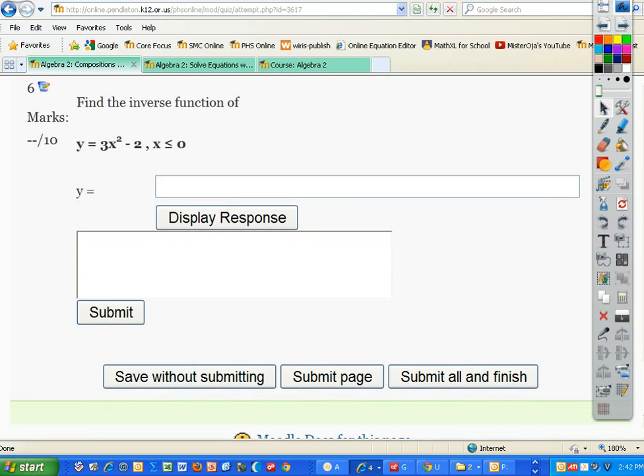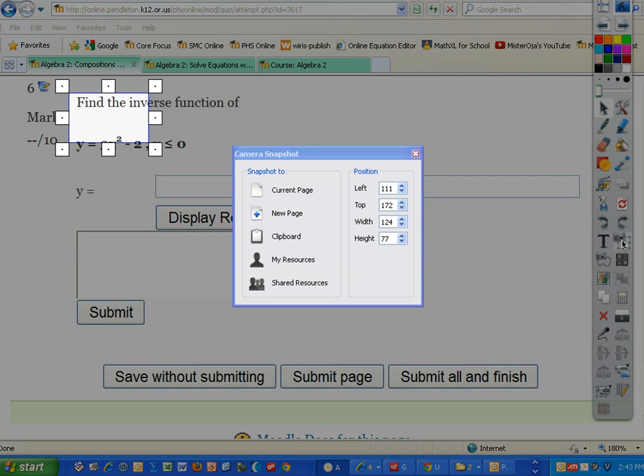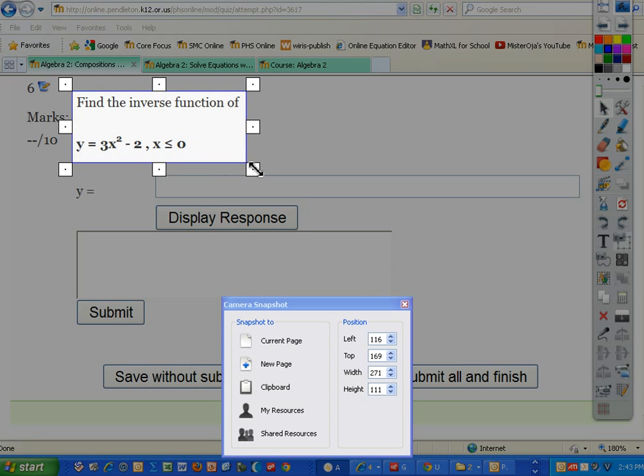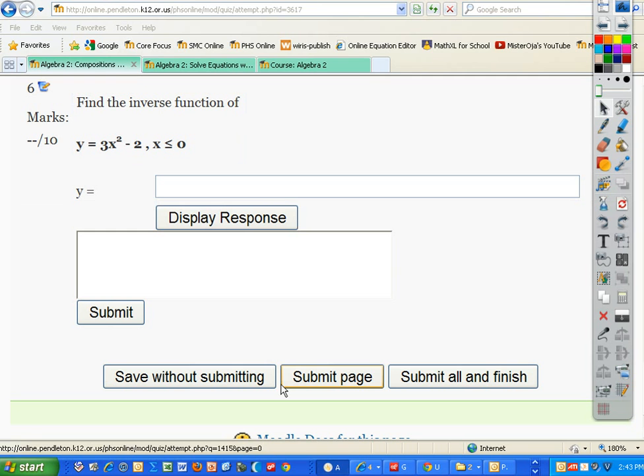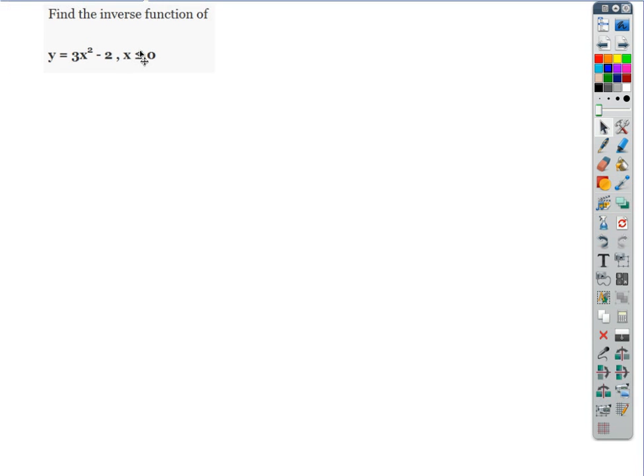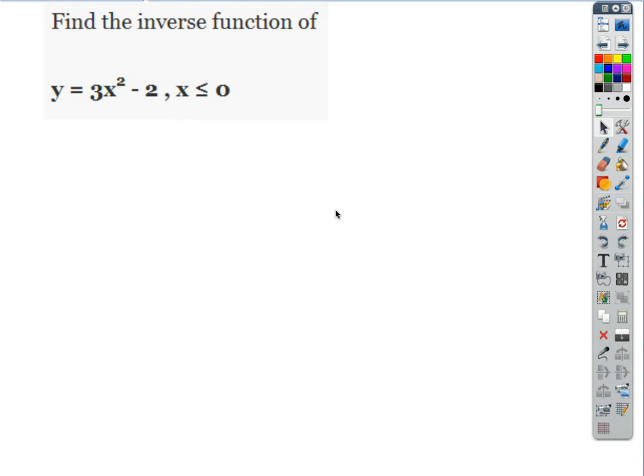This is a tricky one. This is saying x is negative, okay. And you'll see why we need that here in a second. Let's do it. So if we want to find the inverse, we're going to switch everything in there. Everything gets switched. So this becomes x equals 3y squared minus 2 where y is less than or equal to 0. Why do we need that? Well, you'll see here in a second.